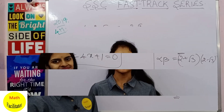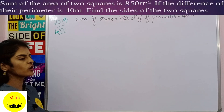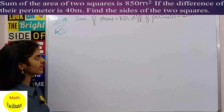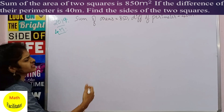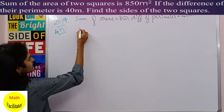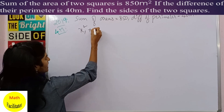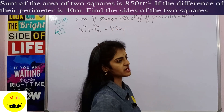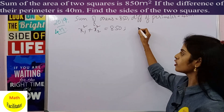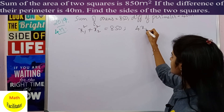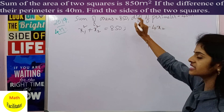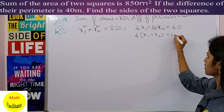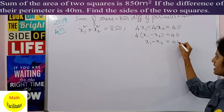Moving on to the four-marker question from 2019: the sum of the areas of two squares is 850 m², and the difference of their perimeters is 40 m. Find the sides of the squares. Using area = side², let the sides be x1 and x2. So x1² + x2² = 850. The perimeter formula is 4 × side, so 4x1 - 4x2 = 40, which gives x1 - x2 = 10.